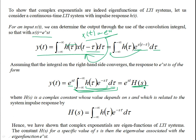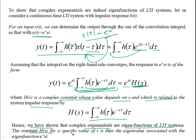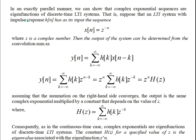The important thing to see is that for an LTI system whose response can be represented by the convolution integral, if a complex exponential input e^(st) is applied, the output is of the same form — e^(st) multiplied by a complex amplitude H(s). Thus, complex exponentials are eigenfunctions of LTI systems, and H(s) for a specific value of s is the eigenvalue associated with the eigenfunction e^(st). In an exactly parallel manner, complex exponential sequences are eigenfunctions of discrete time LTI systems.